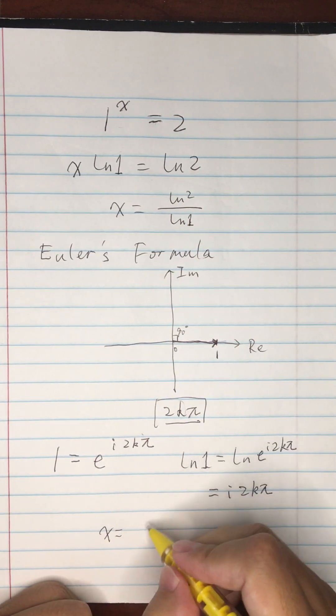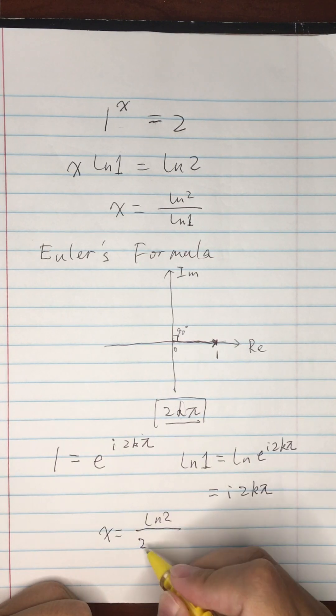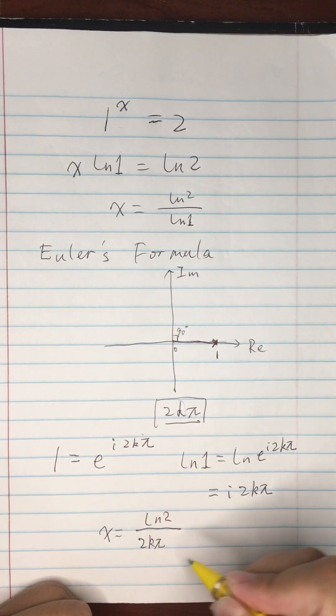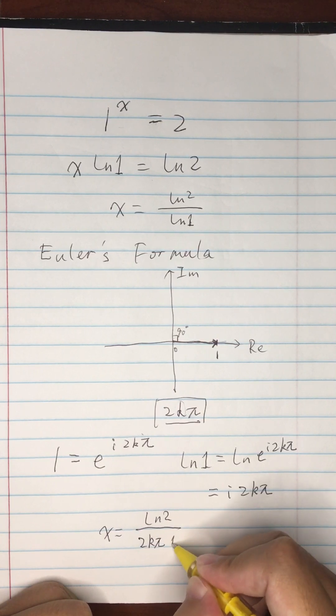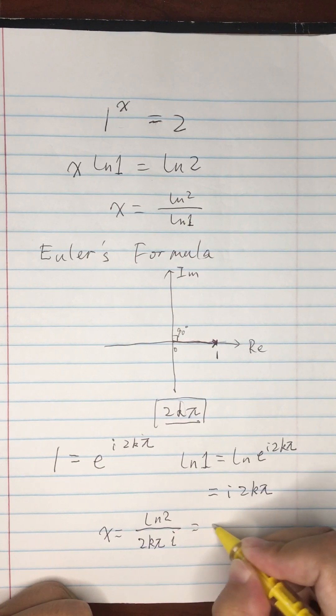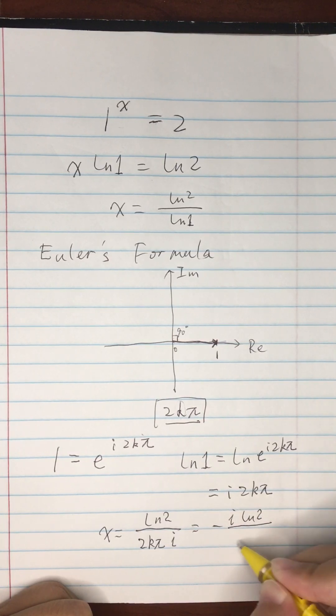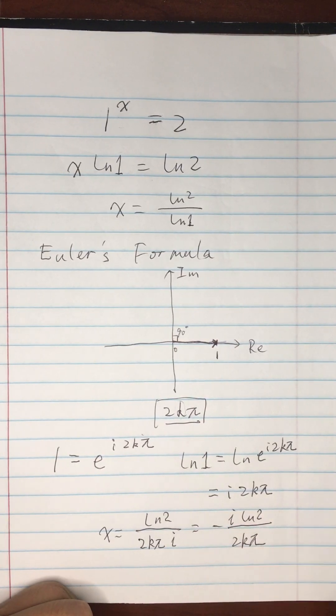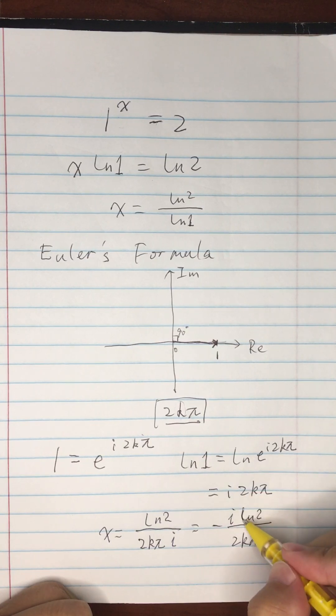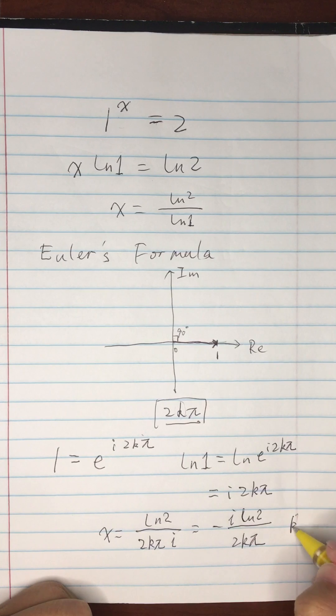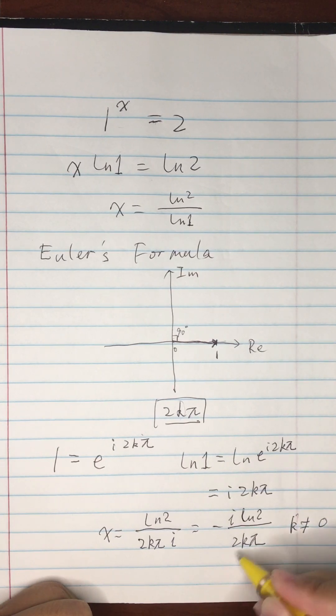So x is going to equal ln(2) divided by i times 2kπ. Here we have to pay attention to the value of k. k cannot be equal to 0.